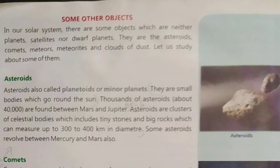In our solar system, there are some objects which are neither planets, satellites, nor dwarf planets. They are the asteroids, comets, meteors, meteorites and clouds of dust. Let us study about some of them.